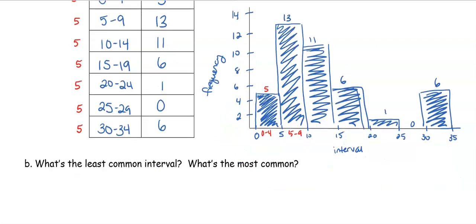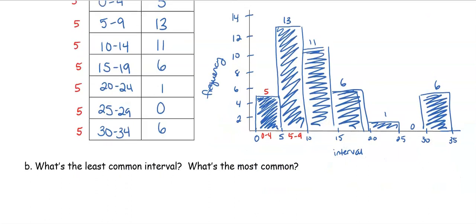Now let's answer some questions based on our histogram. What is the least common interval? Well, that one is really easy. So the least common is going to be between 25 and 29 cousins. But then if we look at here, no one has more than 33 cousins.